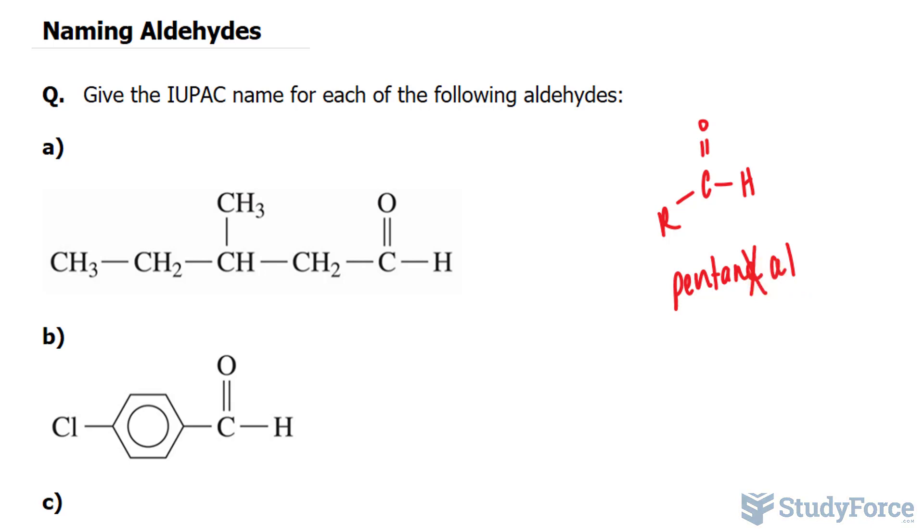Next we start numbering these carbons. Now in aldehyde, the group itself, the functional group, is called a formyl group. So this functional group is formyl. We start numbering from where the carbon is closest to the formyl group.